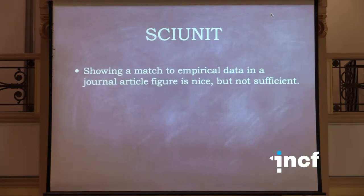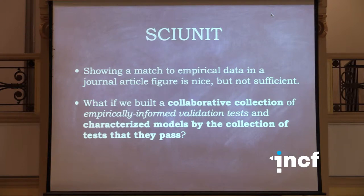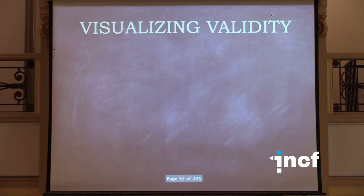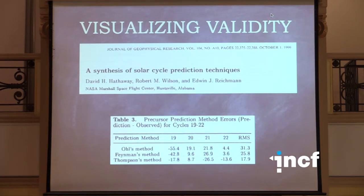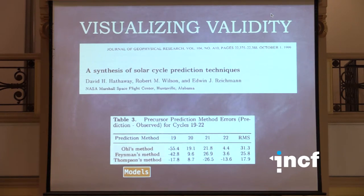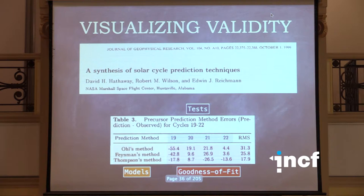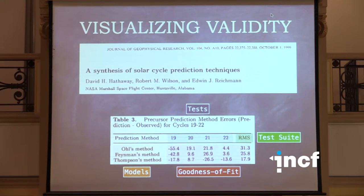We can't just show an informal match to data in journal articles — it's not going to work. But if we can build these unit tests collaboratively, we can continuously test models and characterize their validity according to the set of tests they can pass. Visualizing that — what would it look like when looking at models and data? You might have different models trying to predict something, like solar dynamics, with different tests corresponding to different solar cycles, a measure of goodness of fit as the output, and a test suite that aggregates results so you can decide which model accounts for the data that matters to you.